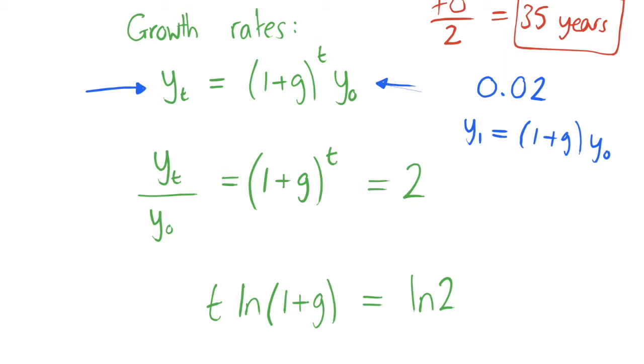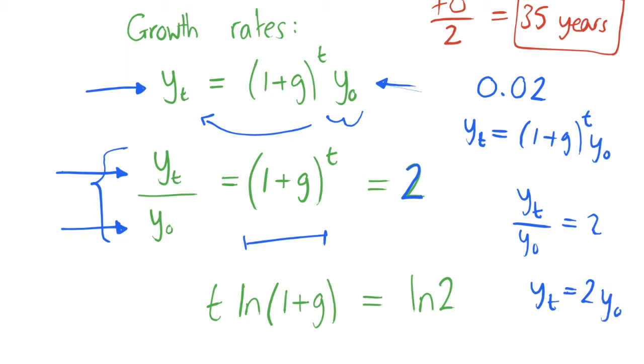What we can do is divide this y0 term across to the left-hand side to get that yt over y0 is equal to 1 plus g to the power of t. What I've done here is set this equal to 2, because what we're looking to do is find the time when the variable at time t is double y0. So we have yt over y0 is equal to 2, or yt is 2 lots of our y0.